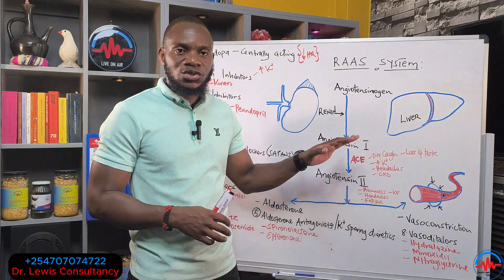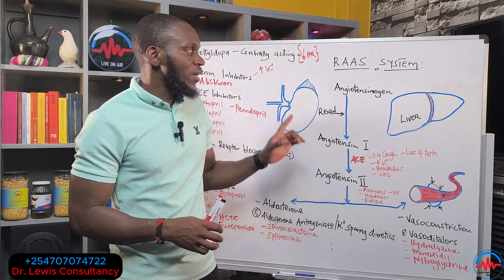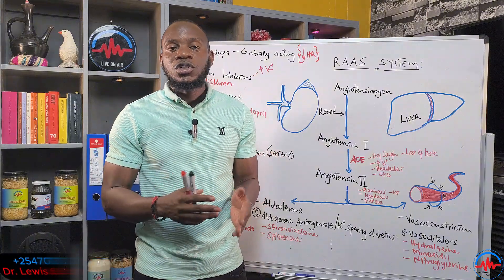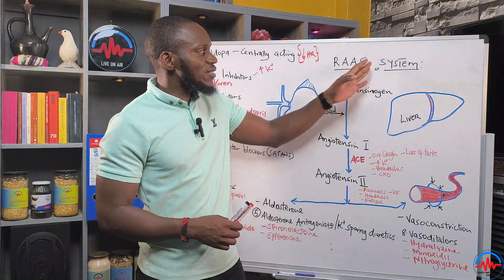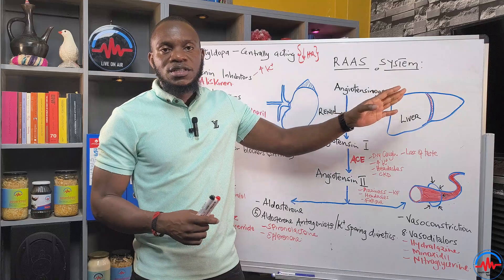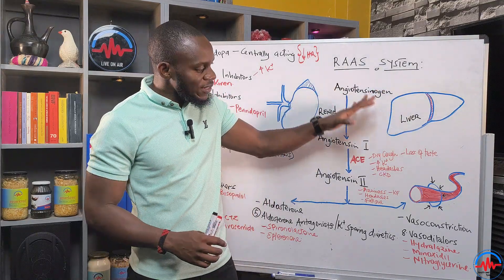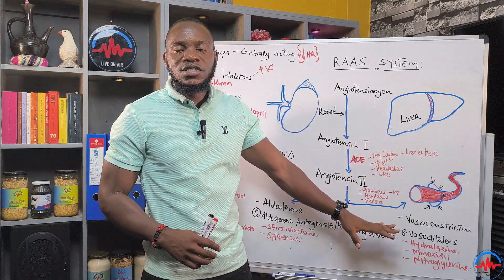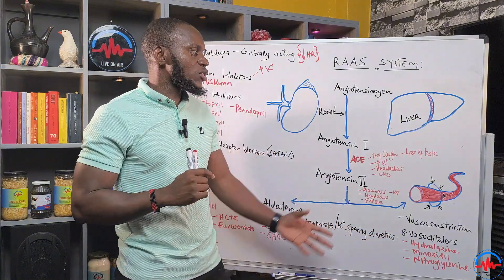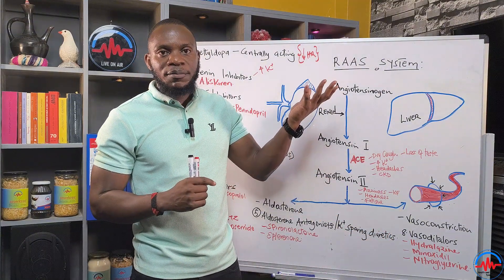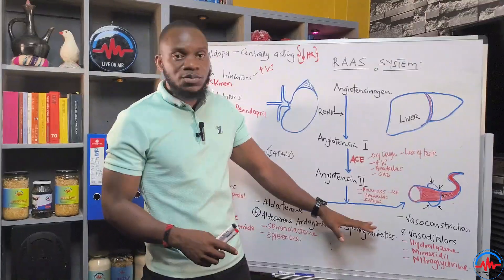For those who want a recap: the RAAS system is a system that is supposed to bring up blood pressure when it's going down. So the end result of this RAAS system is high blood pressure — it brings the blood pressure back up from low. The end result of this process in the body is to actually raise the blood pressure.